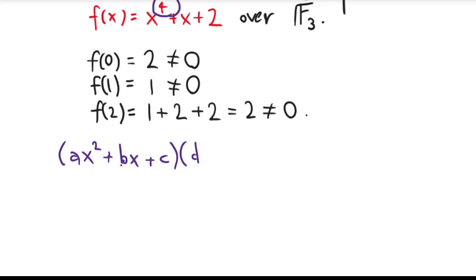So if it was degree 2 or degree 3, you would just need to check that it doesn't have any roots, and that would mean that it's irreducible. But in this case, it's degree 4, and so we have to deal with another case here. And that other case is, what if f(x) is a product of two quadratic polynomials, which is something that we haven't ruled out yet? So this might still be true. So maybe there are numbers A, B, C, D, E, and F in F_3, such that this factorization is true.